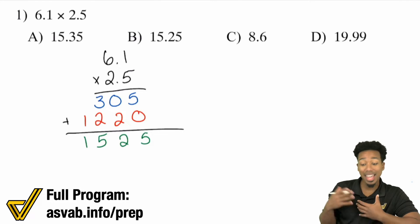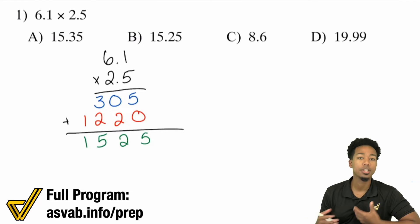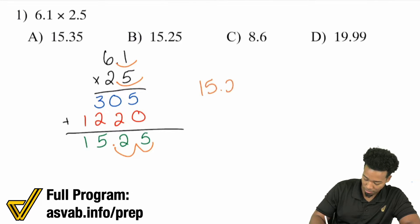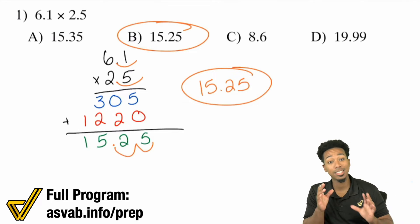Now what we do at the end is bring those decimals back. Over here, you may notice that we have one decimal, two decimal places. So we'll come back 1, 2, the answer is 15.25 and you are done. That is literally it.